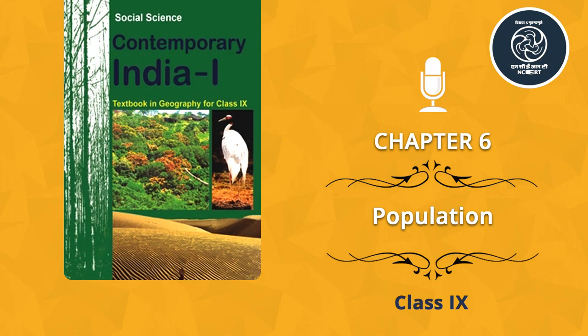Chapter 6: Population. This chapter has 8 pages and is read by Shiba. Dear friends, can you imagine a world without human beings? Who would have utilized resources and created the social and cultural environment? The people are important to develop the economy and society.